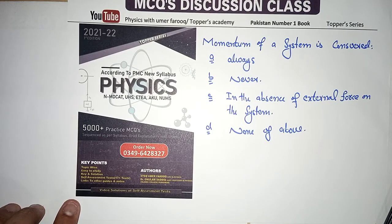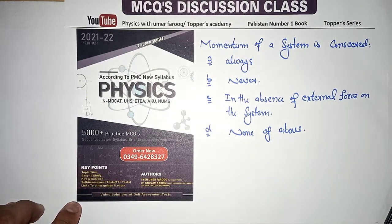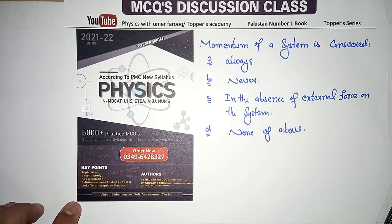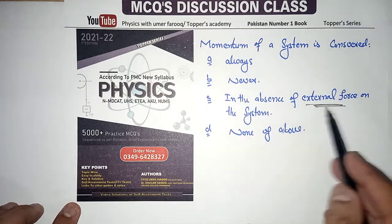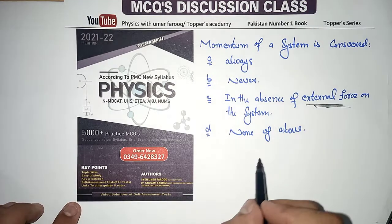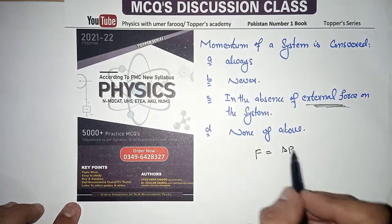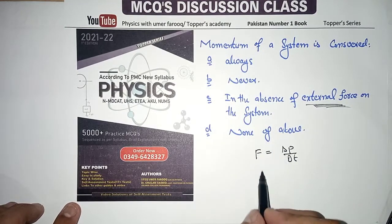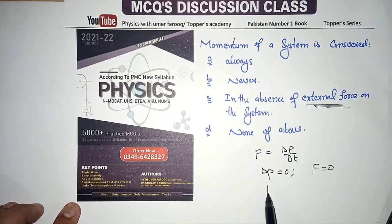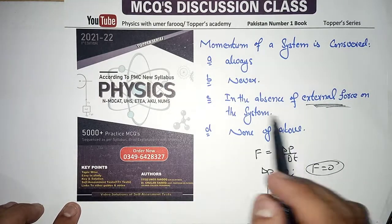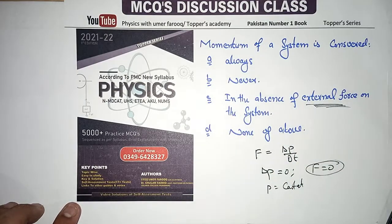Momentum of a system is conserved — always, never, in the absence of external force on the system, or none of the above? Momentum is conserved when the external force on the system is zero. Because F = ΔP/Δt, so P is constant when force is zero. Therefore momentum is conserved in the absence of external force on the system.